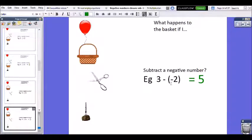So minus minus, when these signs are right next to each other, that means you're adding. So 3 add 2 makes 5.